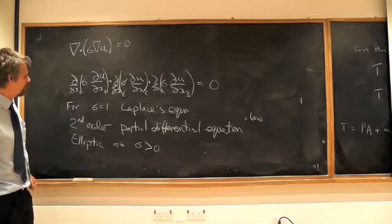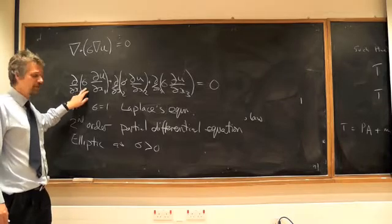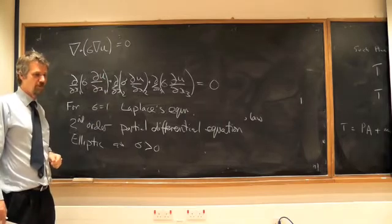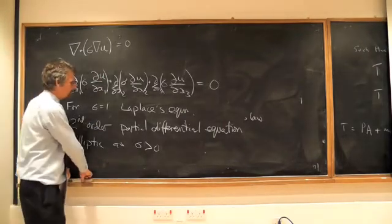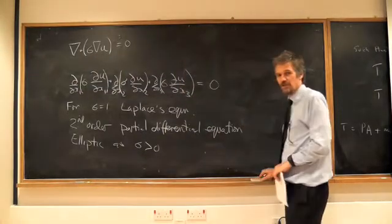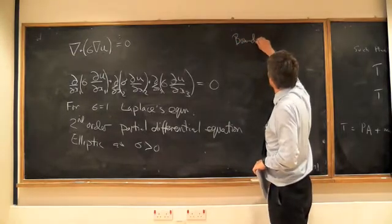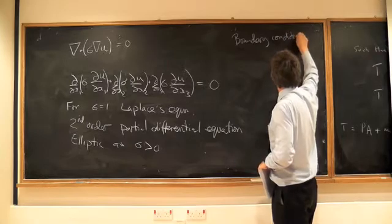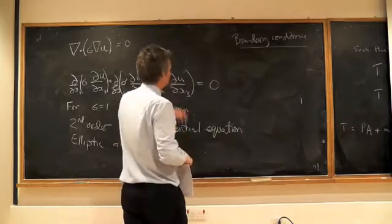So we'll see how this helps us in a moment. And we're also considering the forward problem. In other words, sigma is assumed to be known, and then we'd solve for the voltage. That's the forward problem, the one that's solved by nature. So to get a unique solution to this, we have to apply some boundary conditions.